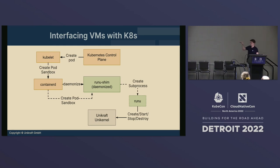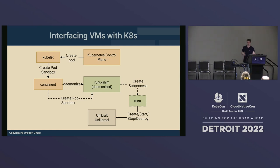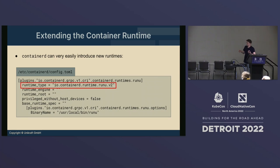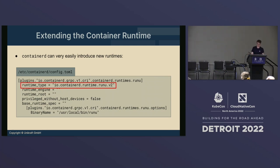But this is where we inject ourselves in the whole process. We create a RunU shim. The RunU shim then invokes the instantiation of a kernel using whatever virtual machine monitor you'd like — for example, QEMU or Firecracker. It's very simple to install: you basically add one line under the prefix, list the binary name, and then you can specify that you'd like to run a unikernel as opposed to a container in your Kubernetes manifest.